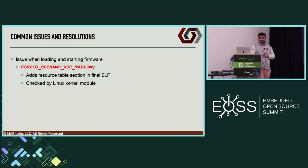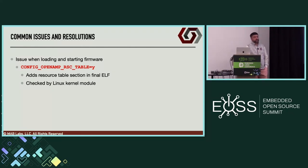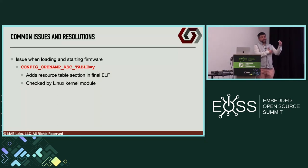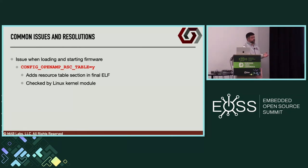Pivoting into common issues: one of the first is issues loading and starting the firmware. The kernel module will throw an error if you don't have the appropriate entries in your ELF file. One of the biggest reasons is that you need to define CONFIG_OPENAMP_RESOURCE_TABLE — this causes resource_table.c to compile an explicit entry for the resource table within your linker script, which gets added to your final binary. That's a common issue that a lot of people run into, and it's important to make sure it's part of your board configuration.